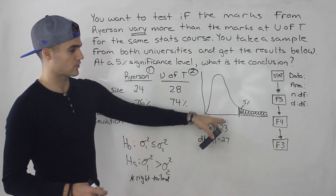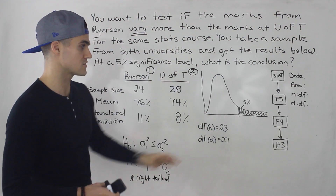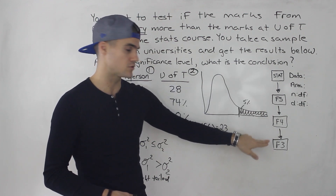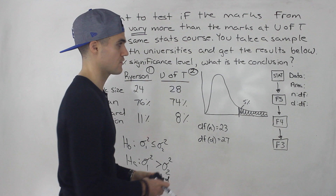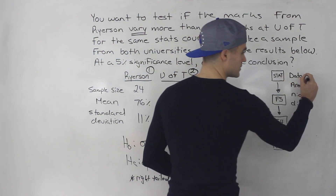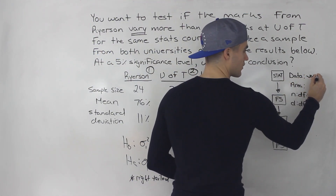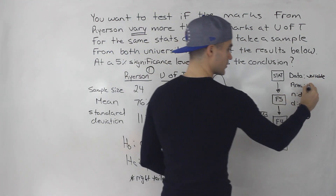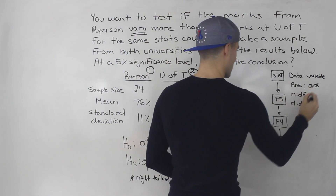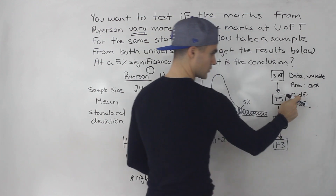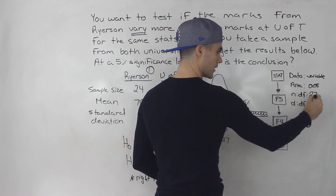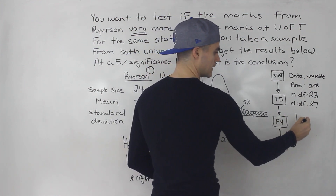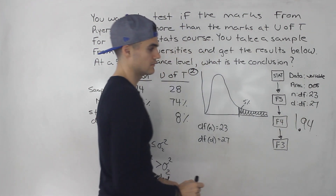You can look up that critical value in the table, or use a calculator. Go to Stat → F5 for distribution → F distribution → Inverse F. In the inputs, set data to variable, the area (always the right-tailed area) to 0.05, degrees of freedom of the numerator to 23, and denominator to 27. When you execute that, you end up getting 1.94 — that is the critical value, rounded to two decimal places.